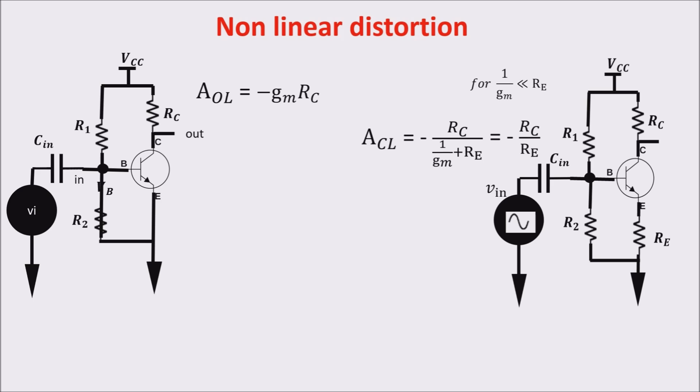We can understand this by realizing that the input voltage is divided into a big component dropping on Re and a little component dropping on the base emitter junction which produces the non-linear behavior. As larger is Re in comparison with 1 over gm which is the emitter resistance as linear is the behavior. In fact Re and 1 over gm work as voltage divider.